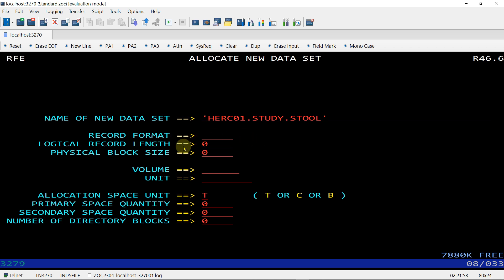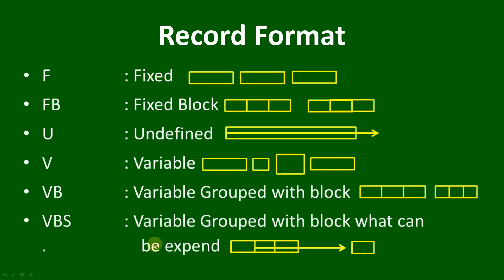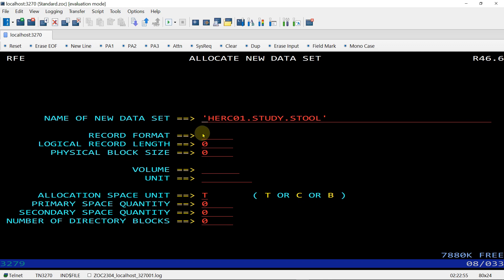This field specifies the format of records in the data set. Commonly we use Fixed, Variable, and Undefined. The record formats are: F (Fixed), FB (Fixed Block), U (Undefined), V (Variable), VB (Variable Block), and VBS (Variable Block which can be extended). When allocating PS or PDS files we will use F or FB. When working with COBOL or DB2 we will see Undefined. Here I am giving FB — Fixed Block.